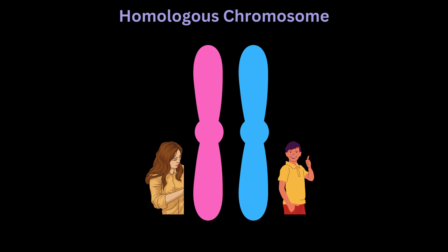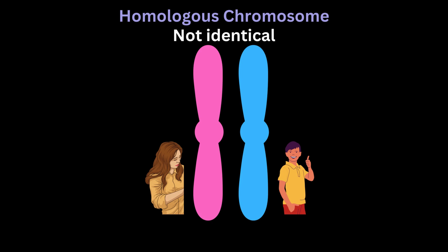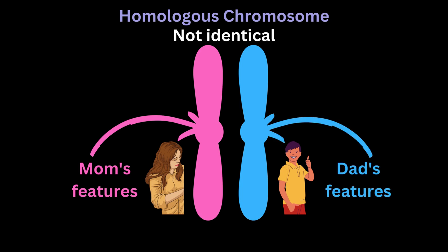Now, are homologous chromosomes identical? Absolutely not. My mother will give me her chromosome 1 which has her features in it, while my father will give me his chromosome 1 which has his features in it. So these chromosomes are not identical.